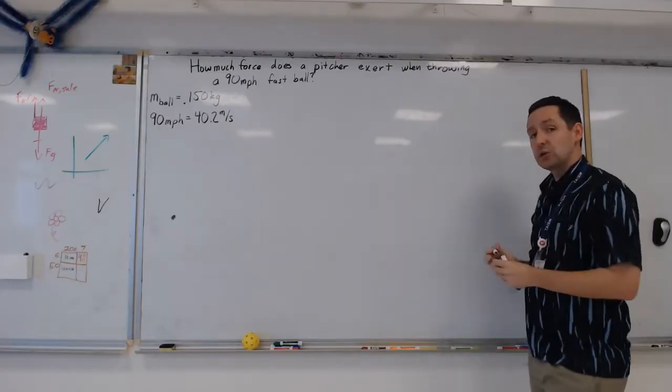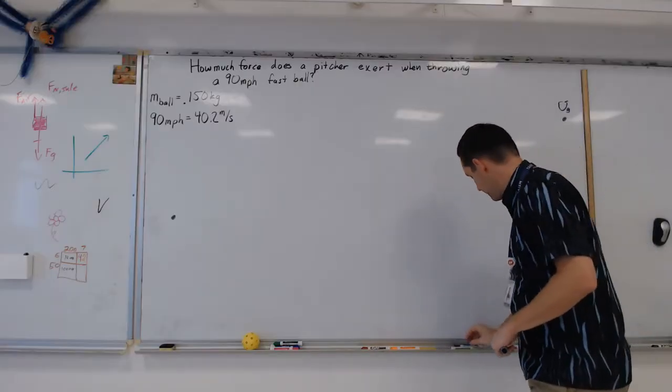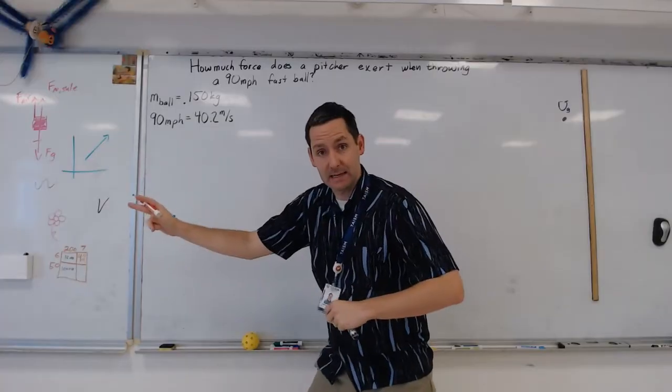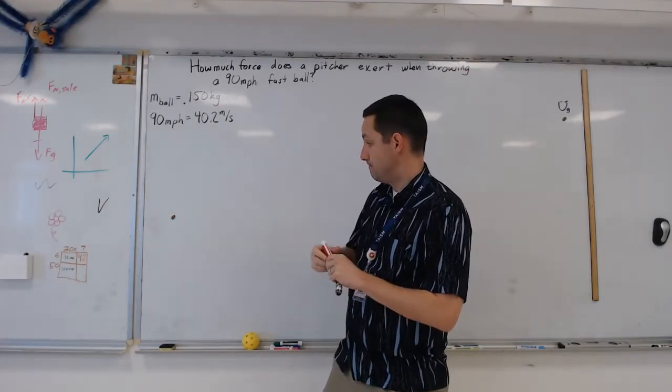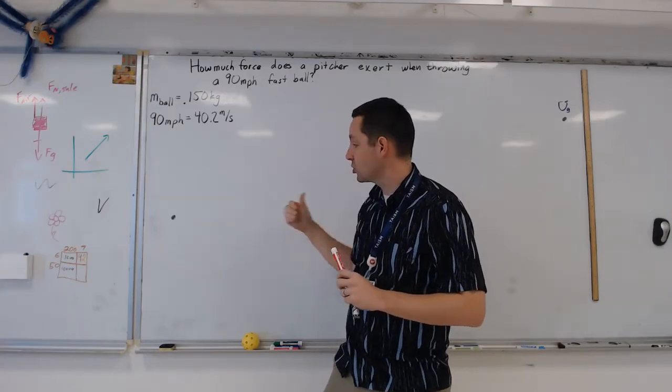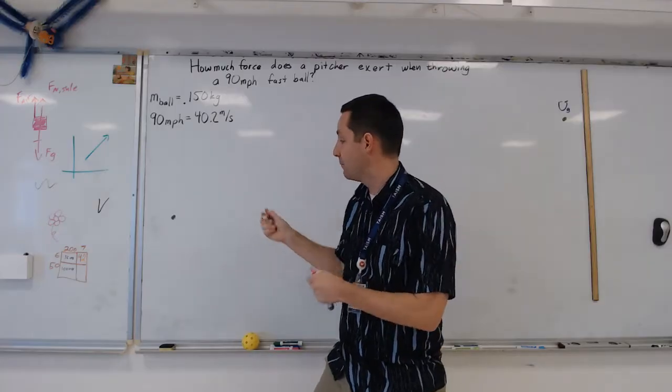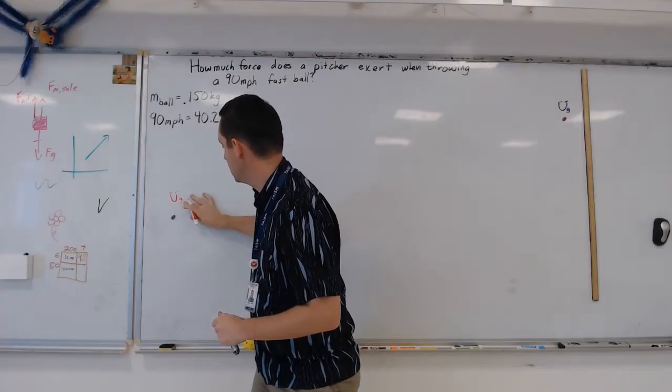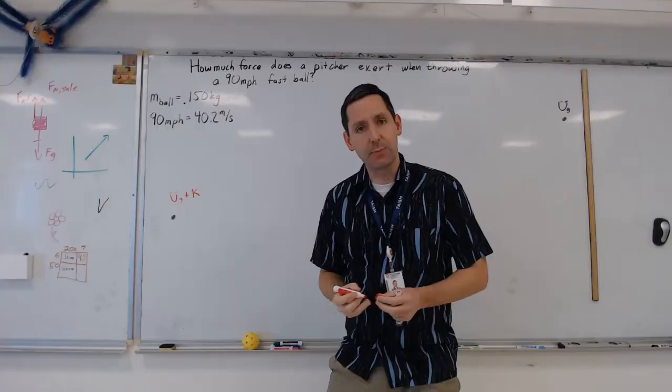It's gravitational potential energy because it's got some height above the ground. Now, we're going to come over to this side. As he releases it, it's now a lot lower than it was. So it's going to lose some of that gravitational potential energy, but it's also going to gain some kinetic energy. So at that point, it's going to have both gravitational potential energy and kinetic energy because that's when he releases the ball.